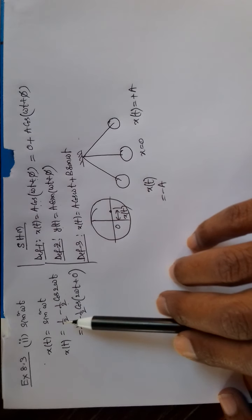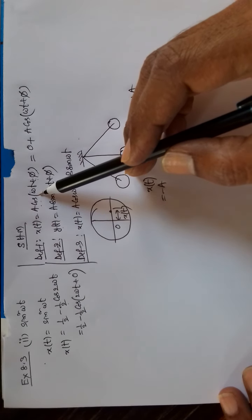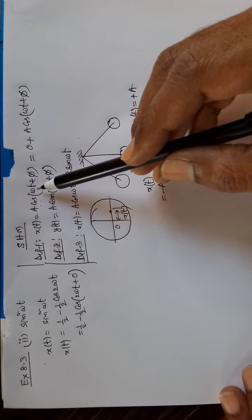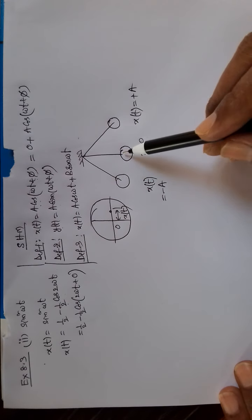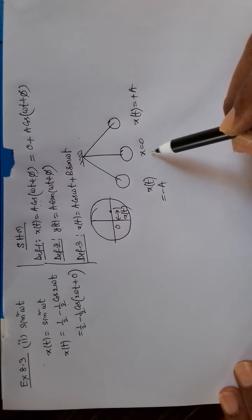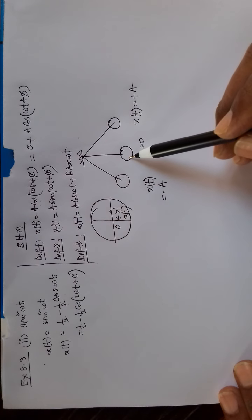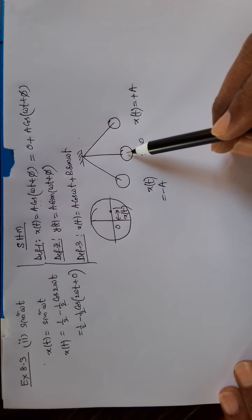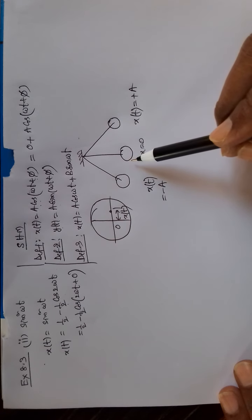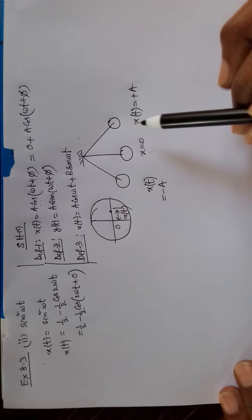But you get one doubt: a constant 1/2 is coming — what about this constant? This equation can be written as 0 plus a cos(omega t + phi). This function tells you that the projection point is executing to-and-fro motion about the origin, or about a mean position. The mean position is taken at the origin. This 0 tells you it is going up to plus a on the right and minus a on the left.